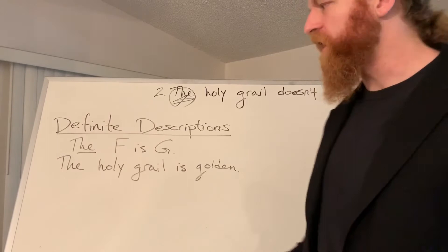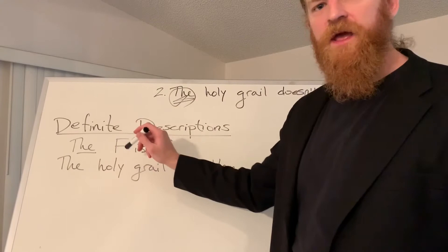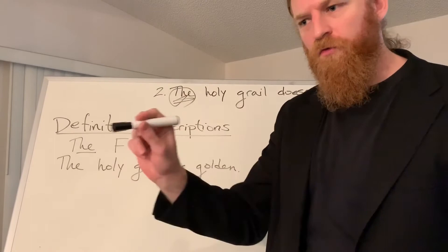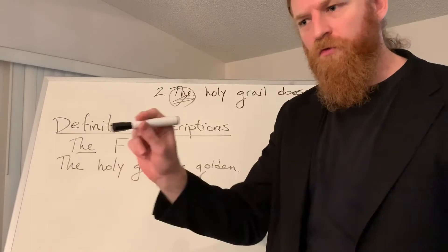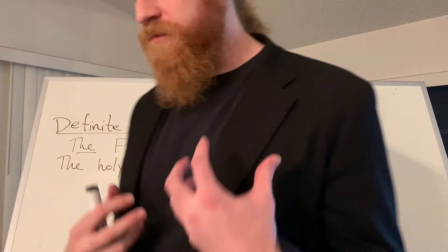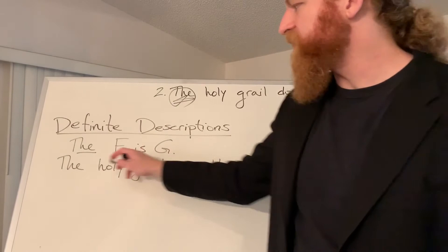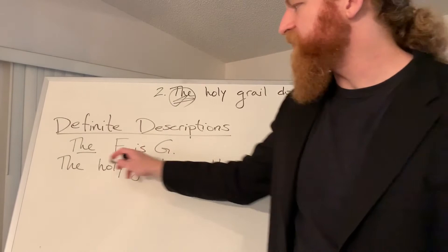A definite description is when we use some term or predicate to describe one particular thing — not just any old thing, but 'the F is G.' So 'the Holy Grail is golden' has the form 'the F is G.' That's the form of a definite description. But Russell thinks there's a much more complex logical form underlying this simple grammatical form. It's not mere subject-predicate — there's something much deeper going on there.